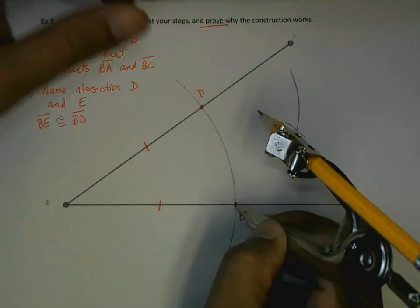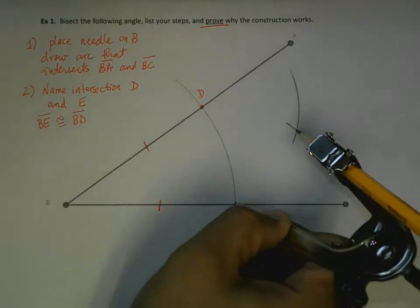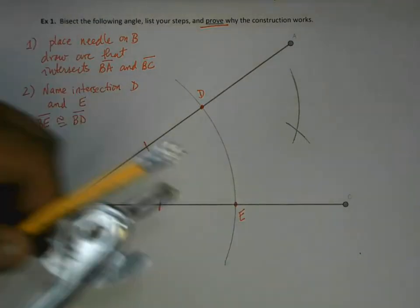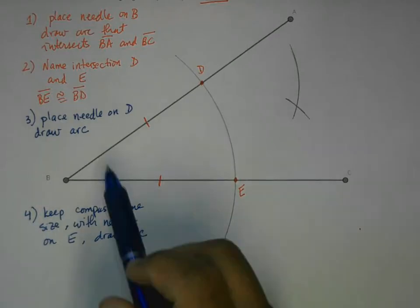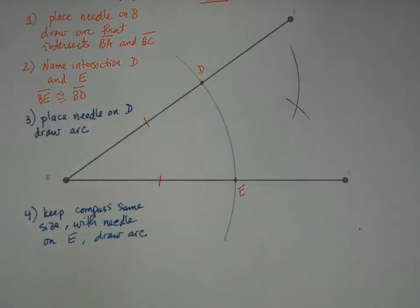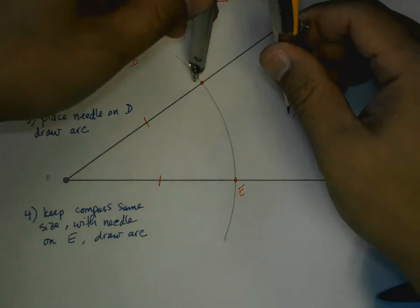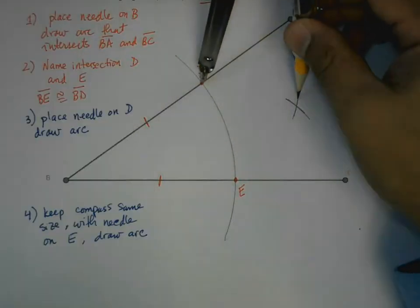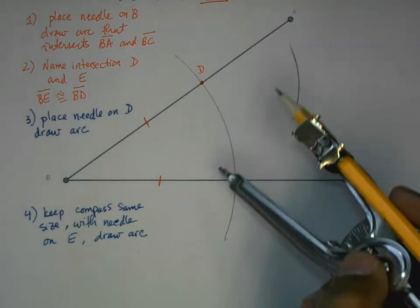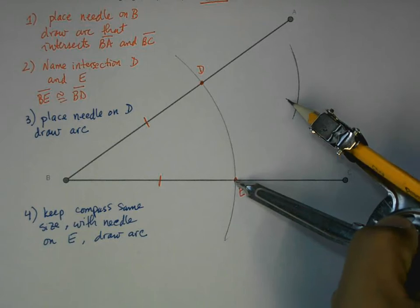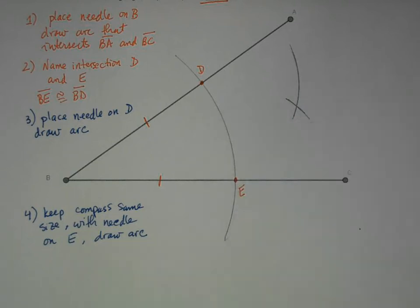Now put the needle on E and draw another arc. So let me write down those steps. Place the needle on D and draw an arc. That's what we did earlier with this compass. The exact same size. Put the needle on E and draw another arc as well.